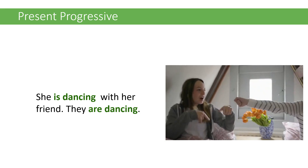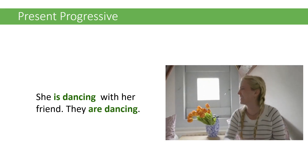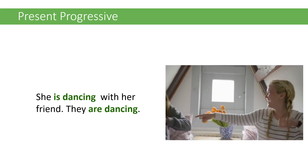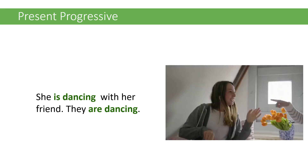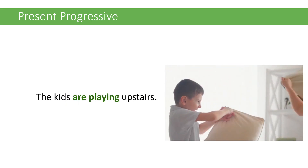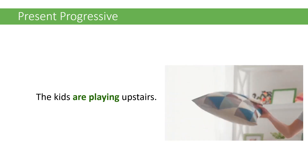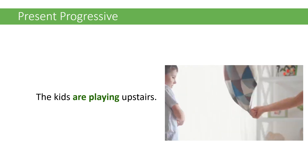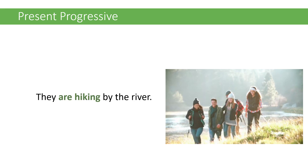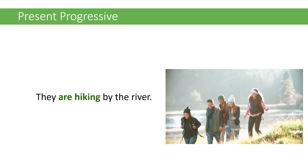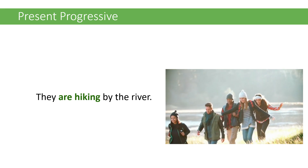Here are some examples. 'She is dancing with her friend' — they're dancing right now, and assumedly it's going to end at some point. 'The kids are playing upstairs' — it's something going on right now but will end at some point, hopefully before they break something. 'They're hiking by the river' — it's something in progress right now but will end at some point. All of these are examples of the present progressive — something happening right now.